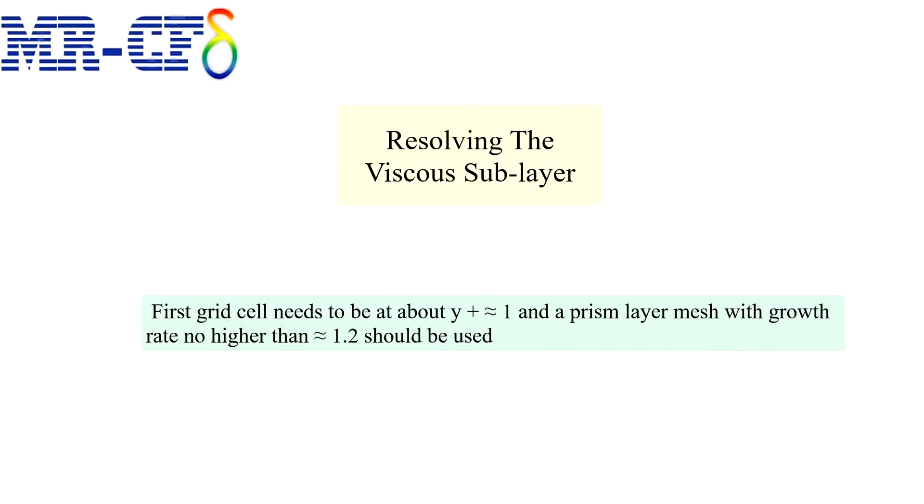First grid cell needs to be at about Y plus equal to 1 and a prism layer mesh with growth rate no higher than 1.2 should be used. These are not magic numbers, but this guideline ensures the mesh will be able to adequately resolve gradients in the sublayer.